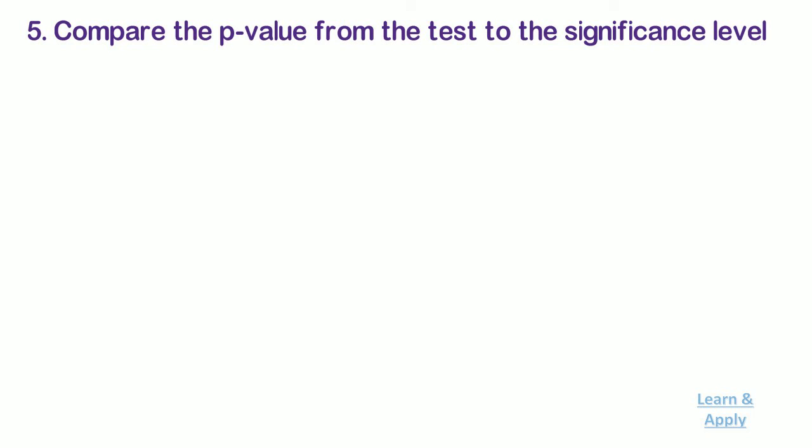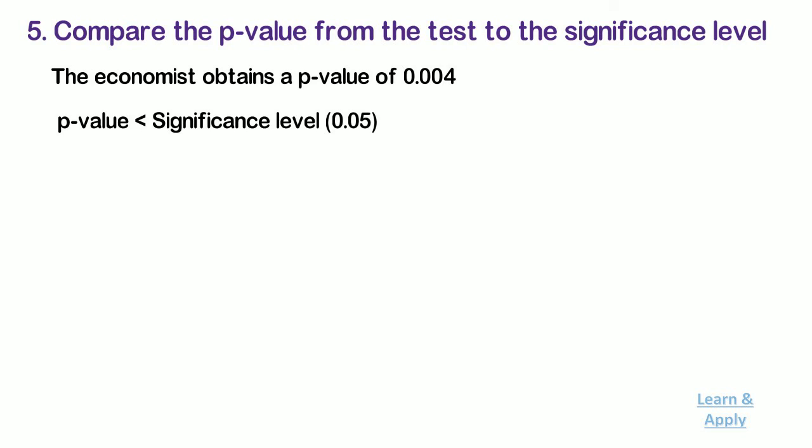Step 4: Collect the data. Then he collects the data for 16 samples of monthly energy cost. Step 5: Compare the p-value from the test to the significance level. After he performed the hypothesis test, the economist obtained a p-value of 0.004. I will explain it in very detail during learning of individual tests. He got the p-value which is less than the significance level of 0.05.